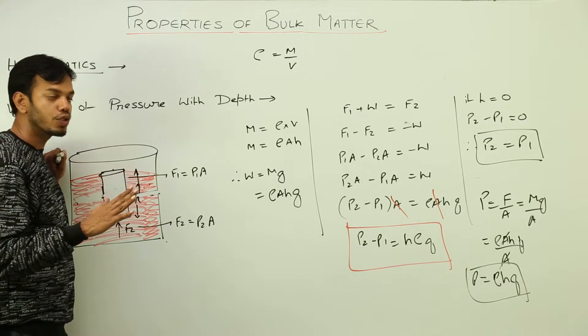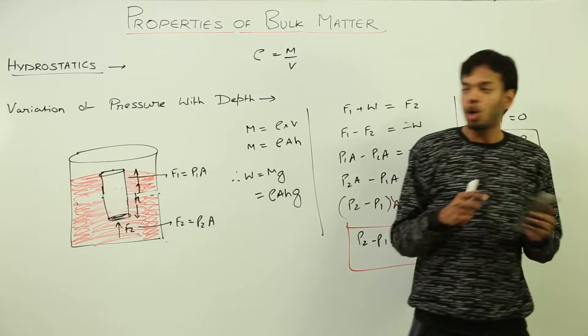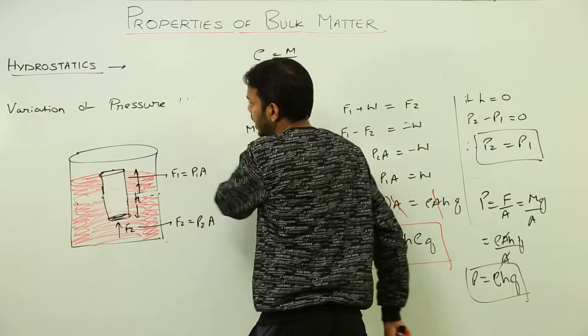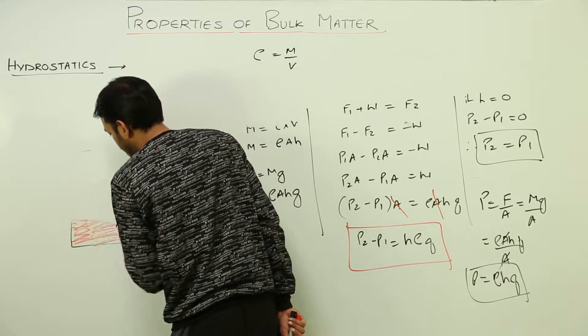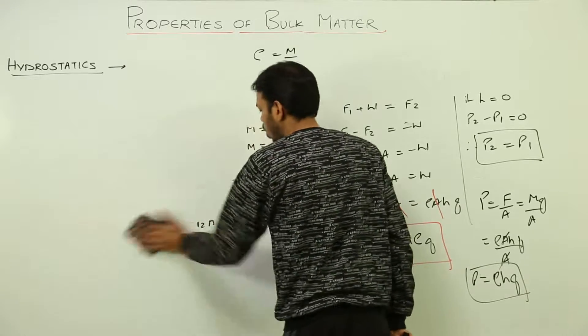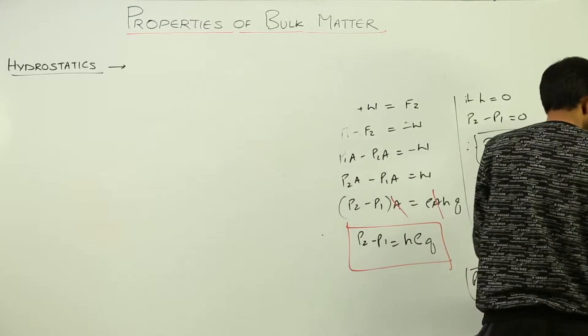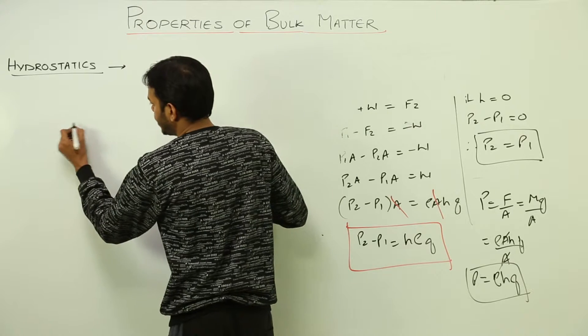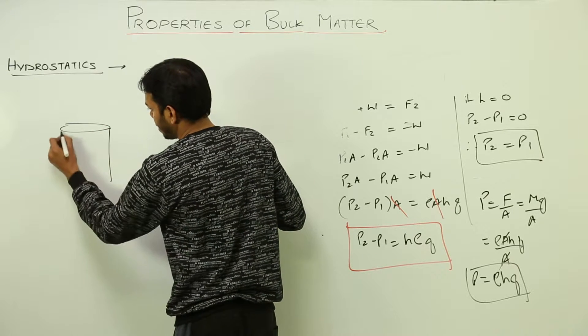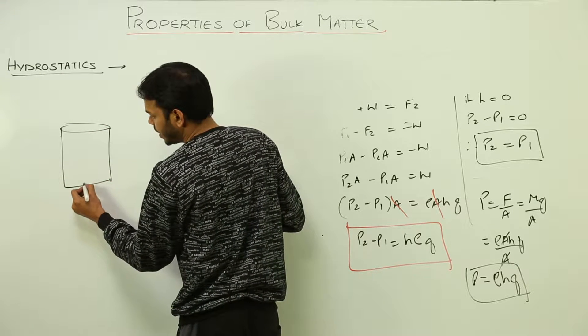So that is why there is another theory called hydrostatic paradox. This theory states that pressure depends only on the height. See, for that I'll draw a diagram. Consider this vessel—from here there is an instrument or needle which is measuring the value of pressure and which is denoted on this scale.